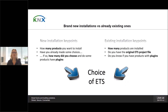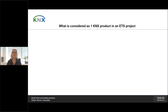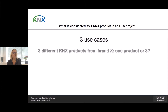Both situations raise the same question before you choose an ETS version: how many products are you planning to install or are already installed, and do these products have plugins? In order to answer, we will first need to define clearly what is a KNX product and what is a plugin. Our clients ask us, what if I have three different KNX products from brand X — is this considered as one product or three products?